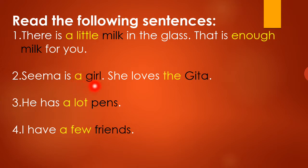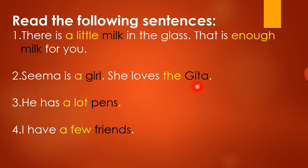So all the words written in yellow color are called determiners, because they indicate towards a Noun. These are known as determiners.